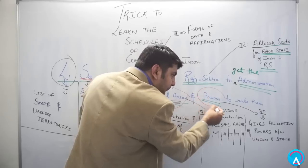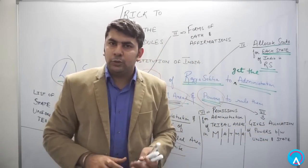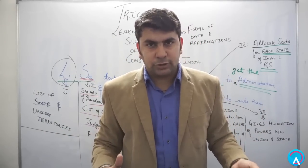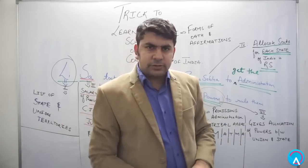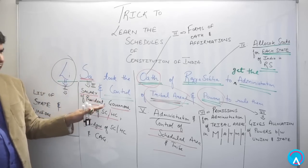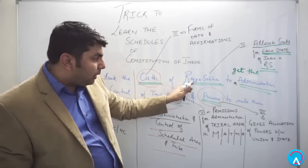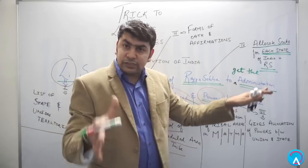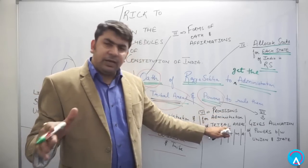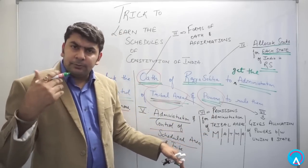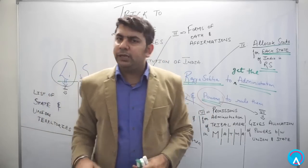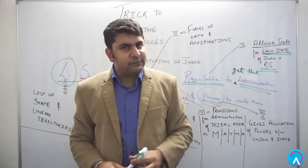The seventh schedule comes from 'powers' — it gives the allocation of powers between the Union and the States. Quick revision: 1st - List of States and Union Territories; 2nd - Salary of President, Governors; 3rd - Oaths and Affirmations; 4th - Rajya Sabha seat allocation; 5th - Administration of Scheduled Areas and Tribes; 6th - Tribal Areas (MATMA five northeastern states); 7th - Allocation of Powers between Union and States.